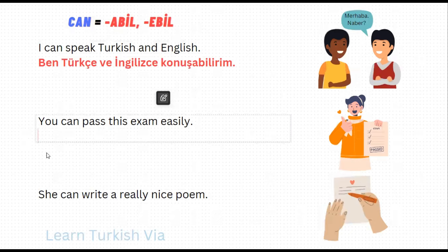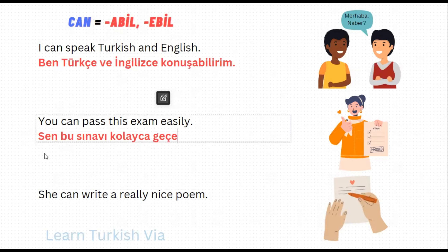In the next sentence, it says 'you can pass this exam easily.' Let's translate. This – bu, exam – sınav. It's a particular exam, so we need the accusative suffix: sınavı. Easy – kolay, easily – kolayca, pass – geç, can pass – geçebil, simple present tense – geçebilir, you can pass – geçebilirsin. So 'you can pass this exam easily' is 'Sen bu sınavı kolayca geçebilirsin.'